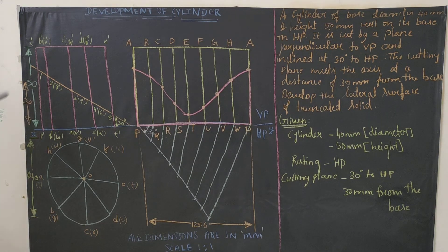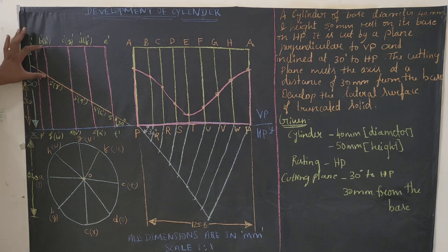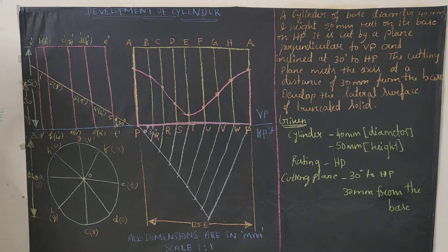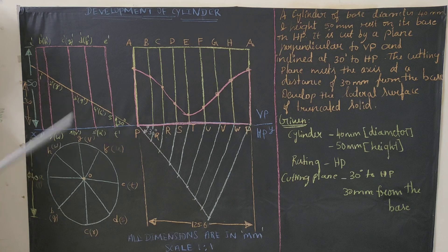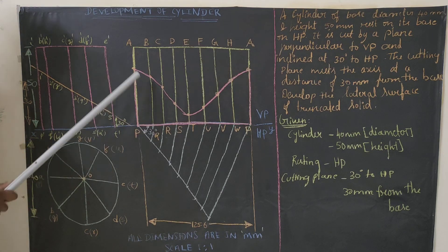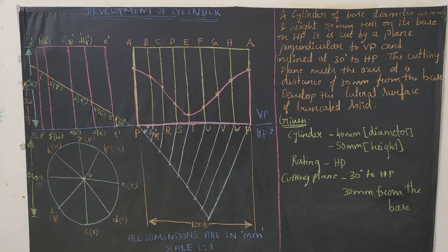To locate each cutting point on the development: measure the height of each cutting point from the front view — for example, 1 dash between A and P — and transfer that same distance to the corresponding vertical line on the development. Do this for all 8 points. Then connect all 8 points freehand — do not use a scale, because a cylinder has no edges, so the curve should be drawn freehand.